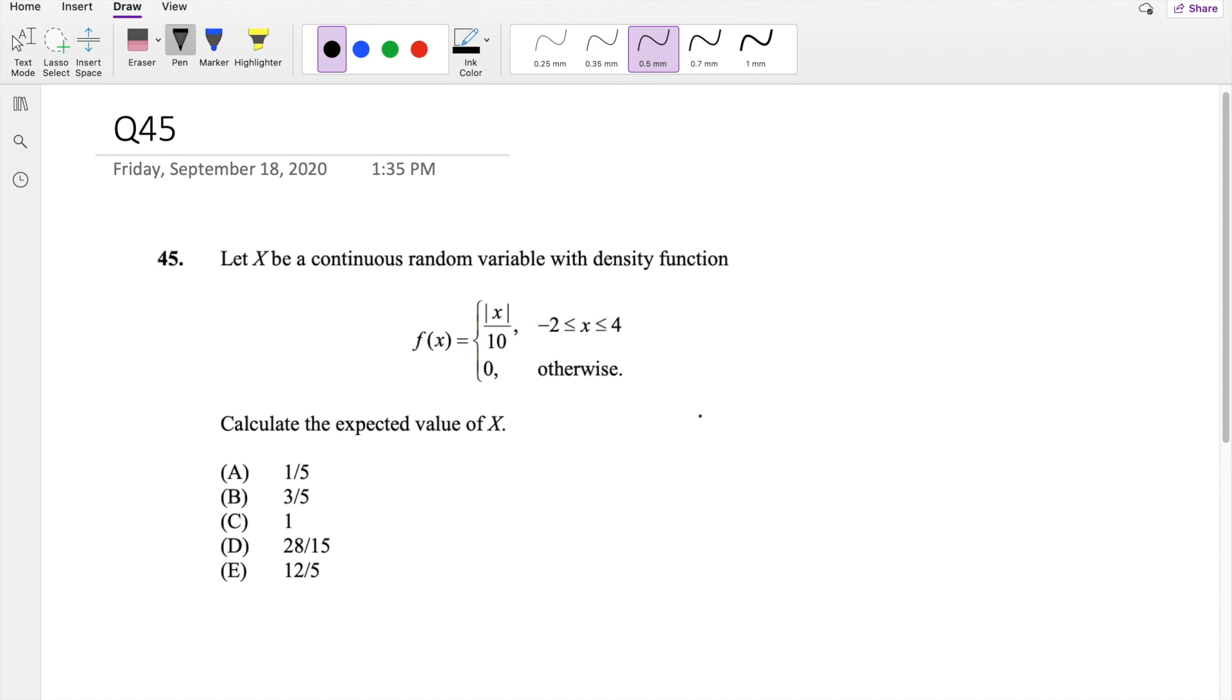Okay, assuming you already attempted it, let's dive right in. So this graph, on the negative side, let's say like negative 1, because it has the absolute value sign, it's going to be the opposite. So from negative 2 to x,